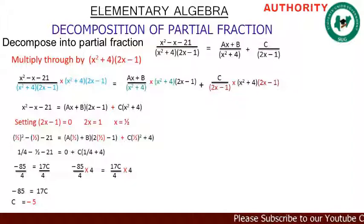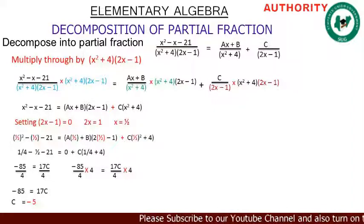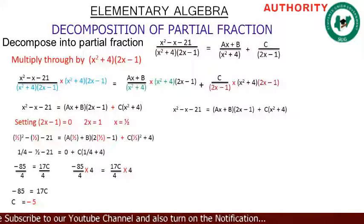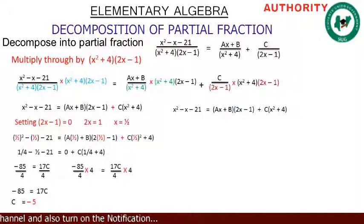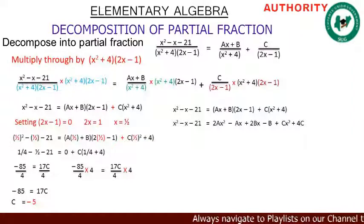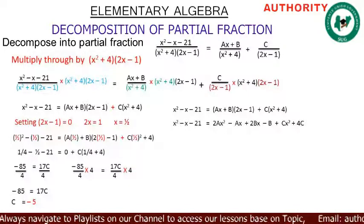We have found c equals minus 5, but we still need to find a and b. We'll use comparing coefficients. Our expression is: x squared minus x minus 21 equals (ax plus b)(2x minus 1) plus c(x squared plus 4). Let's expand the right-hand side fully. Expanding (ax plus b)(2x minus 1) gives 2ax squared minus ax plus 2bx minus b, plus cx squared plus 4c.